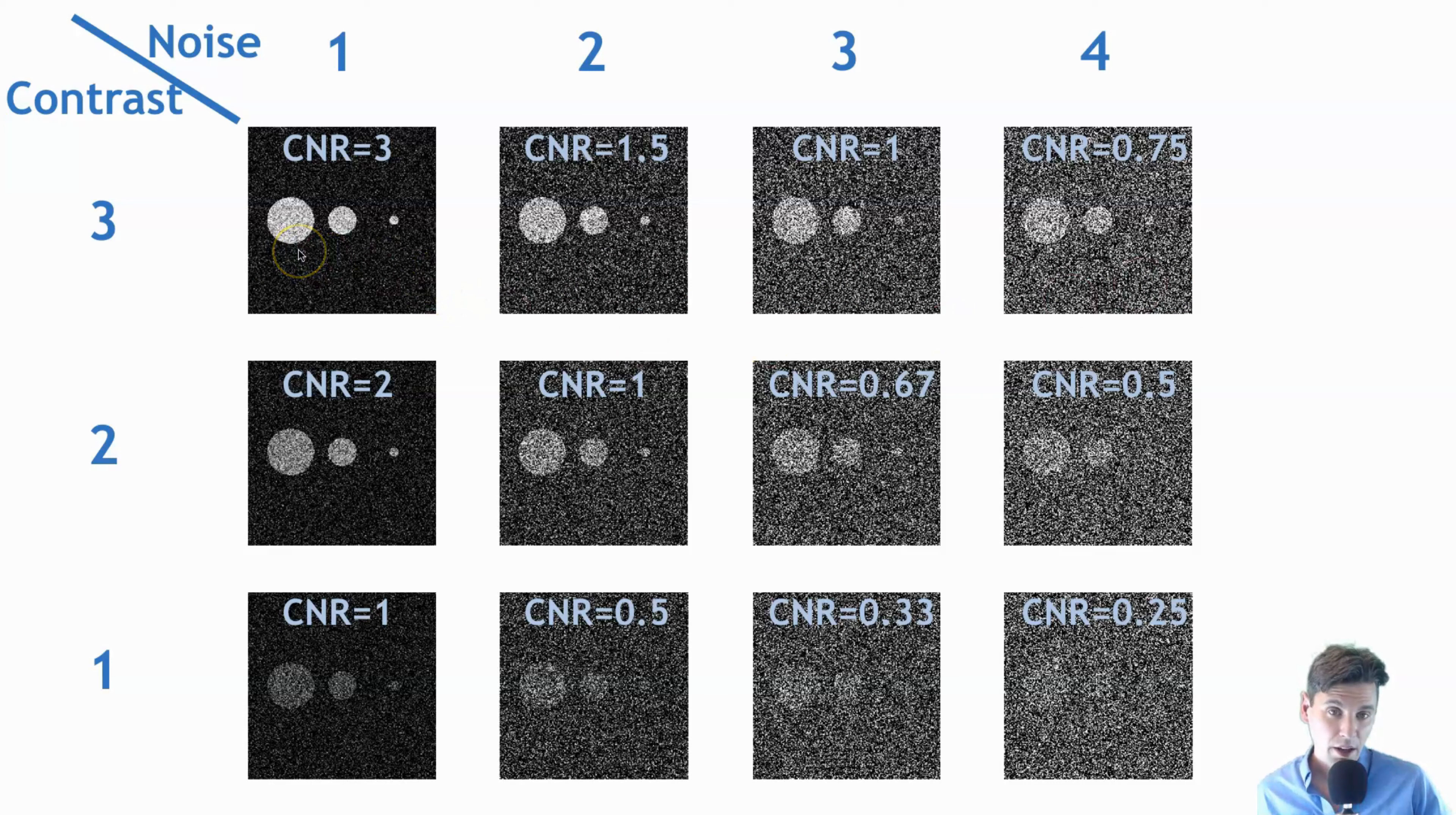So right here, the contrast noise ratio is very high. You can see all these structures very easily. And if you really squint, you may be able to see the smallest structure, but definitely we can see these structures here. But the smallest structure here is difficult to visualize. And all these structures, by the way, they all have the same contrast in this case.